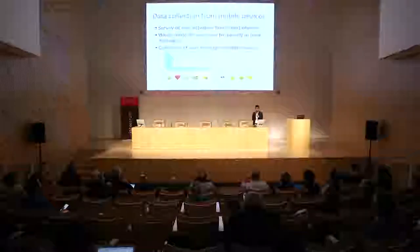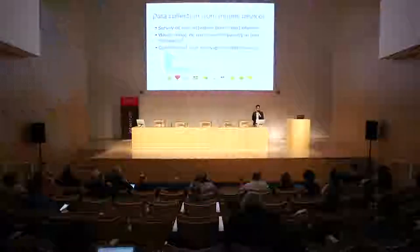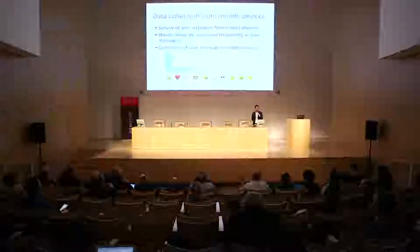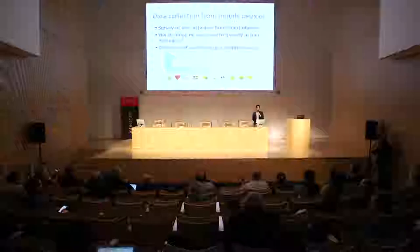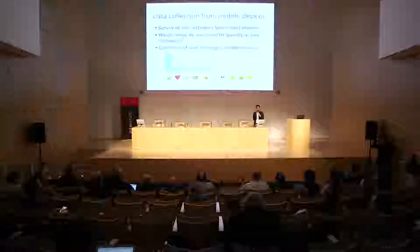Let us consider a survey of user activities from smartphones as an example. Suppose a data analyst is interested in which emoji users frequently use. This question can be resolved if the analyst can obtain all text messages of the users. But this kind of computation is extraordinarily privacy-invasive, so it's almost impossible to conduct this kind of survey. So what we do is introduce local differential privacy.